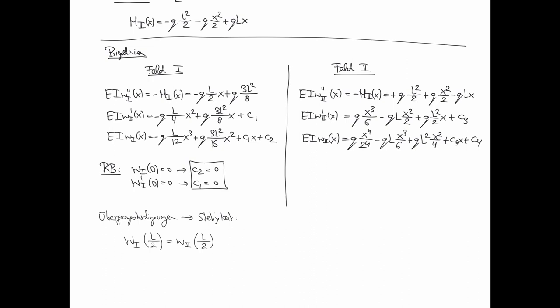Damit ist sichergestellt, dass nicht sowas passiert, wenn ich da oben den Träger habe. So etwas kann nicht passieren. Das stellt diese Übergangsbedingungen sicher. Weil sonst hätten Sie eventuell an der Stelle die Durchbiegung und wenn Sie von der anderen Seite kommen, an der gleichen Stelle die andere Durchbiegung. Das darf natürlich nicht passieren.